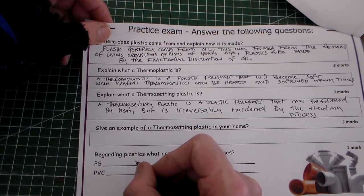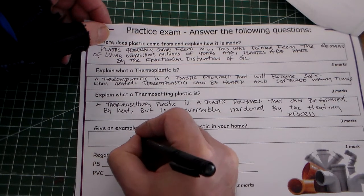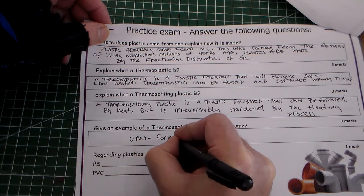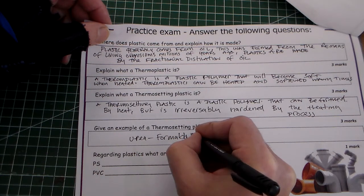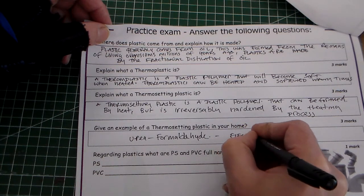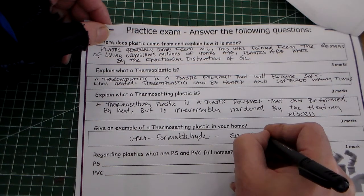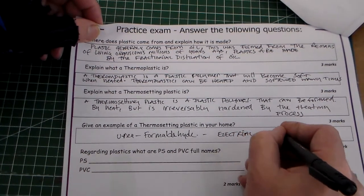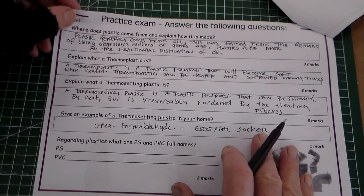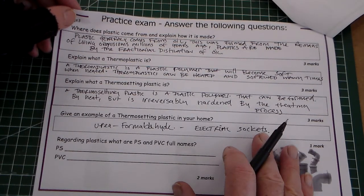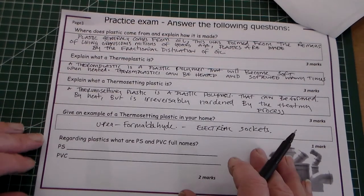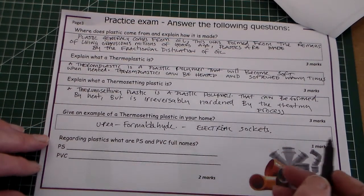Give an example of a thermosetting plastic in your home. I'm going to say urea formaldehyde for electrical sockets. We could also say TPE - thermoplastic elastomers - or silicon thermosetting plastics for kitchen stuff. That's one mark.